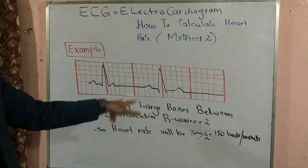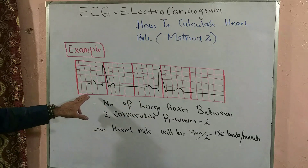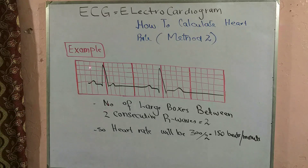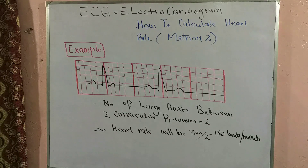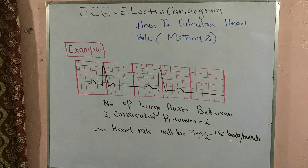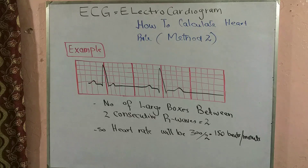Here is another ECG strip example. The large boxes are separated by bold red lines and the small boxes by thin red lines. Identifying the QRS complexes, the tallest positive deflection is the R wave. Counting the large boxes between two consecutive R waves, there are only two. Dividing 300 by 2 gives a heart rate of 150 beats per minute. This is how Method 2 works — it's not that difficult to remember.